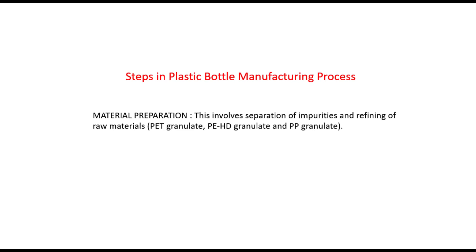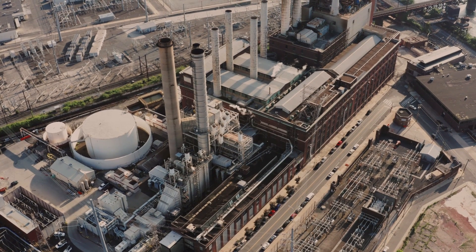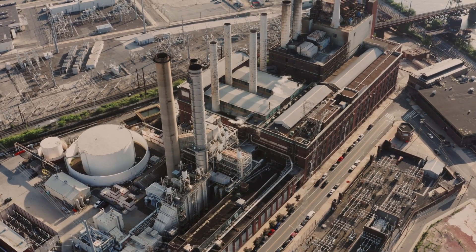Now we will see the various steps involved in the plastic bottle manufacturing process. The first step involves material preparation, which includes separation of impurities and refining of raw materials coming from PET granulate, HDPE granulate, and PP granulates. Each refining and separation step involves a unique set of procedures and techniques which might happen in a factory.